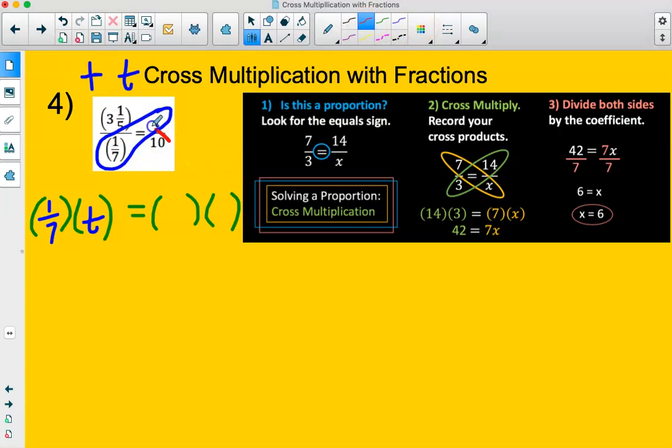Now we're going to multiply this way: 3 and 1/5 times 10. On the left side, 1/7 multiplied by t is the same as 1/7 t.